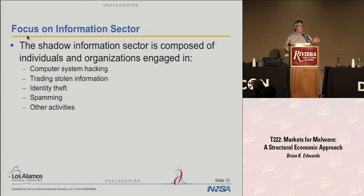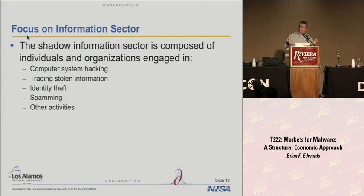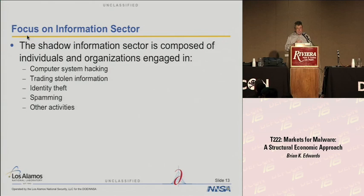We could have looked at agricultural underground activity — marijuana growing, for example. We could talk about illegal services: prostitution, gambling outside the state of Nevada, chemical manufacturing and illegal drugs. But what I'm focusing on today is the information sector — what the national income accounting system refers to as the telecommunications, data processing, and data services sector. The kinds of economic activities we're talking about are computer system hacking, trading stolen information, identity theft, spamming, and other activities.